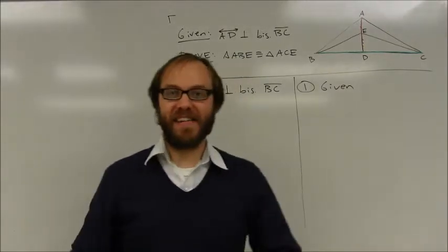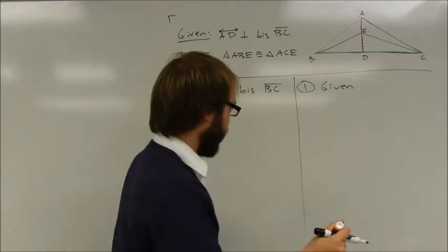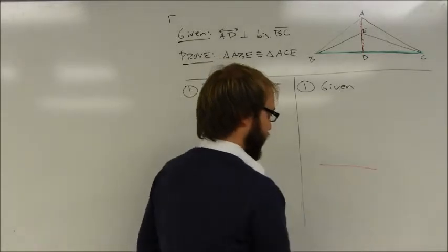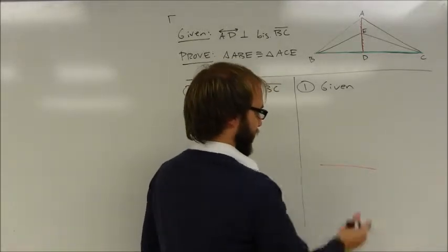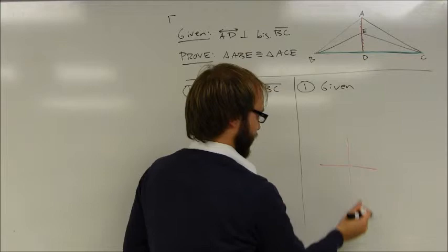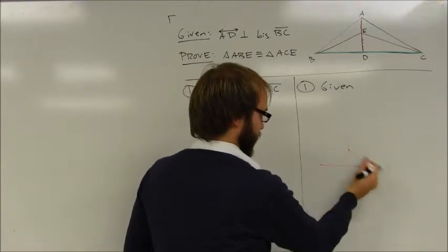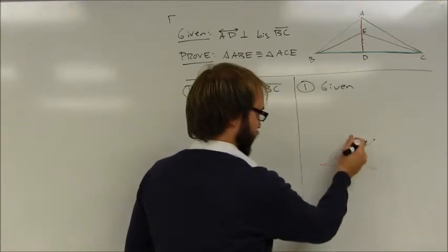The important thing to keep in mind is any time you have a perpendicular bisector, you know that any point that lies on that perpendicular bisector is equidistant from the endpoints of that segment.